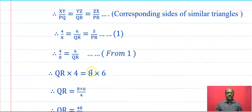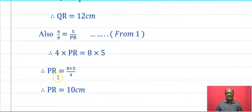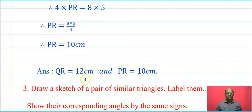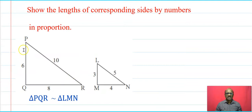Also, 4 upon 8 equals 5 upon PR. Cross multiplying: 4 × PR = 8 × 5, therefore PR = 40 upon 4 = 10 cm. So QR = 12 cm and PR = 10 cm. Question 3: Draw a sketch of a pair of similar triangles, label them, show corresponding angles by the same sign, and show the length of corresponding sides by numbers in proportion. For example, triangles PQR and LMN are similar: PQ upon LM, QR upon MN, and PR upon LN ratios are all equal, and corresponding angles are congruent.